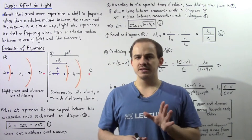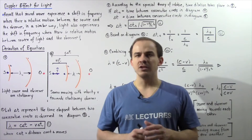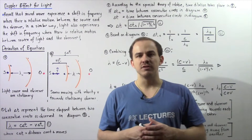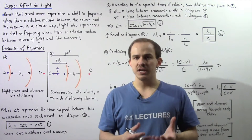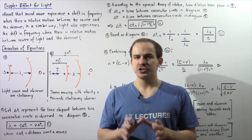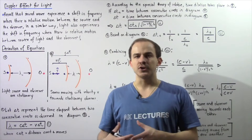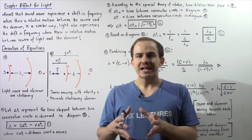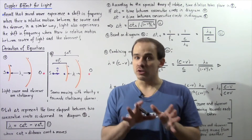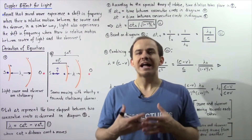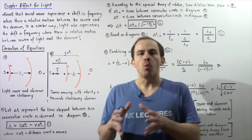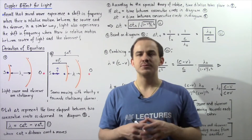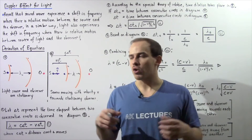There exists a very important distinction between the Doppler effect for sound waves and the Doppler effect for light. Because light travels in a vacuum with a very high velocity, by the special theory of relativity, we cannot actually make a distinction between the motion of the observer and the motion of the source of light. Because of this, instead of having four equations for sound waves, we only have two equations that describe the Doppler effect for light — one for relative motion towards, and one for relative motion away.